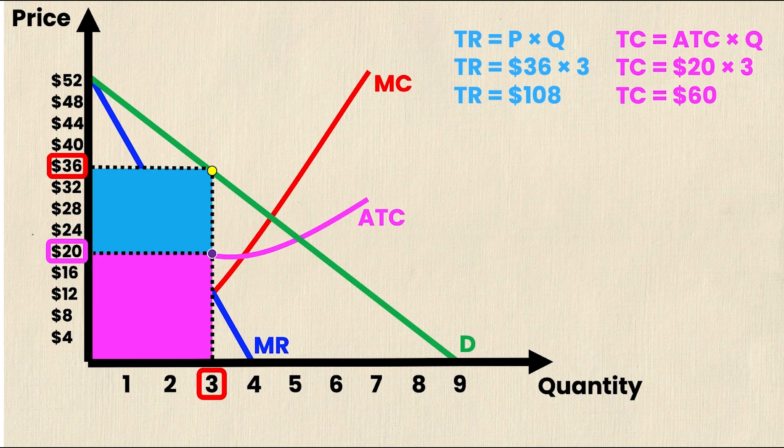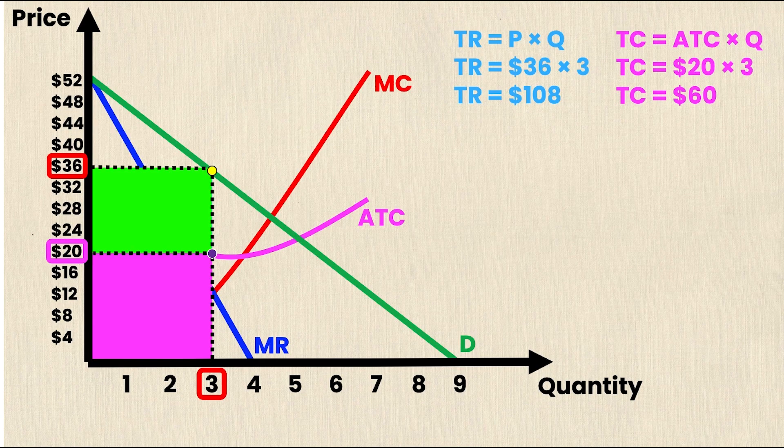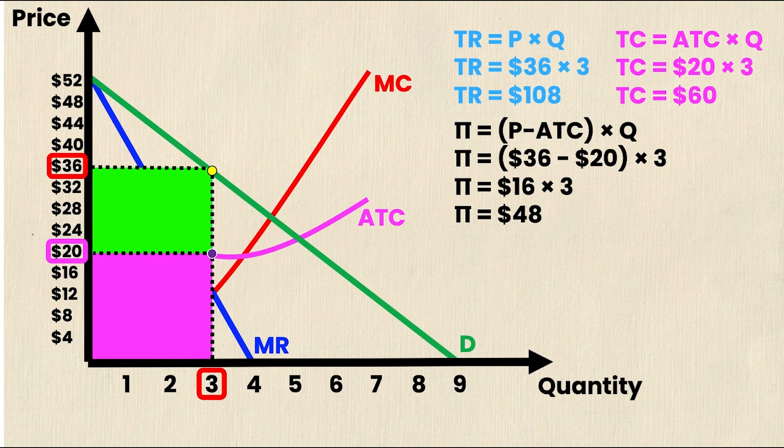We're interested in profit. So let's take a look at the remaining section of the total revenue. This green rectangle right here. This is our profit rectangle. And it can be denoted using this formula. Profit, which in economics is often denoted as pi instead of p because p denotes price, profit is equal to price minus the average total cost times quantity. So profit is equal to $36, the selling price minus $20, the average total cost times the quantity of 3.